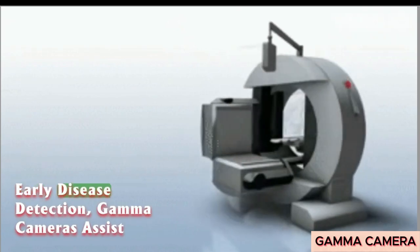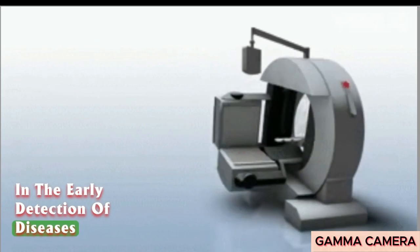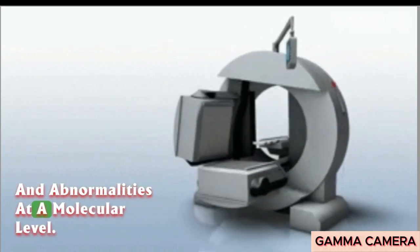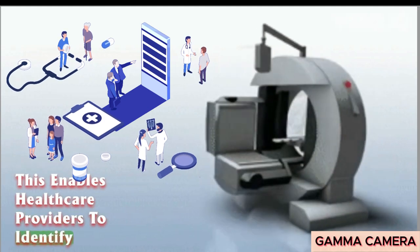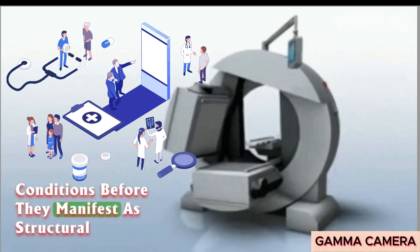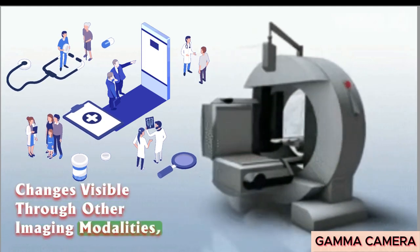Early disease detection: Gamma cameras assist in the early detection of diseases and abnormalities at a molecular level. This enables healthcare providers to identify conditions before they manifest structural changes visible through other imaging modalities.